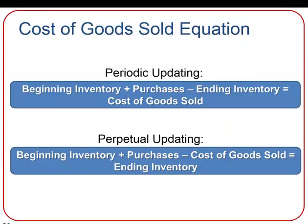There are two ways to keep track of inventory. Either we wait until the end of a period to physically count inventory on hand and solve for what was sold — this is the periodic inventory system. Or we maintain a constant record of cost of goods sold — the perpetual inventory system. Depending on which system we use, we solve for either cost of goods sold or ending inventory.